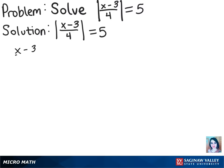We'll have x minus 3 over 4 is equal to positive 5 or x minus 3 over 4 is equal to negative 5 because we're not sure which one. So now we can solve this for x.